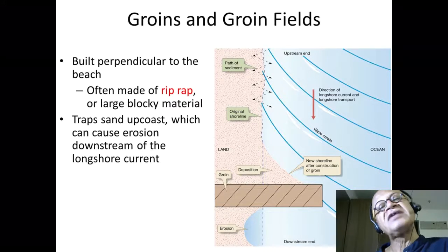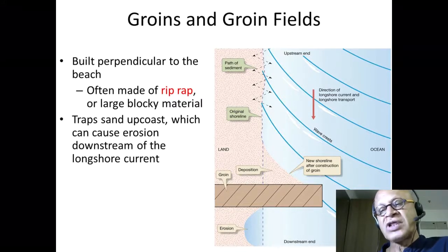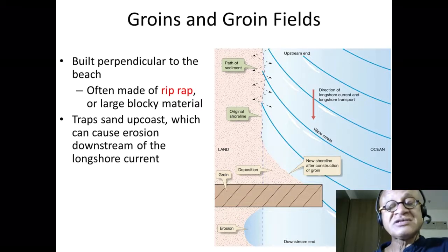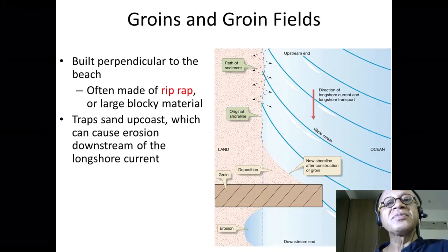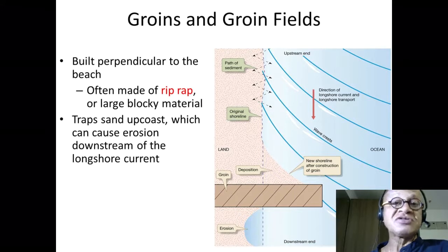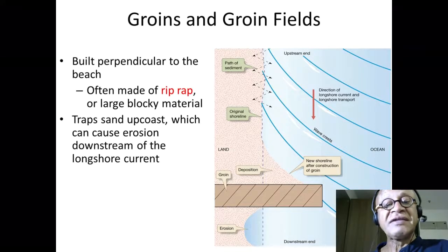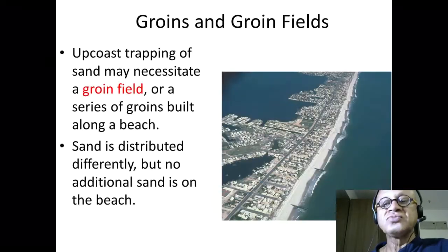Someone decides to prevent the longshore drift of sand by placing a groin perpendicular to the shore. What happens naturally is that sand begins to pile up against the groin on the updrift side. The natural flow of sand is blocked, so you're going to have erosion on the other side — the downstream end is affected negatively.